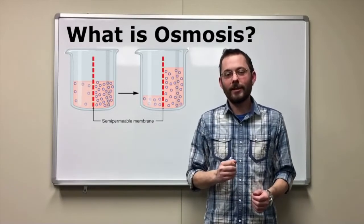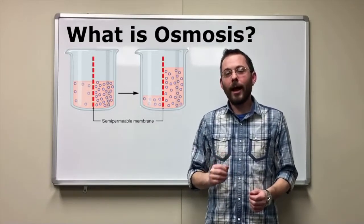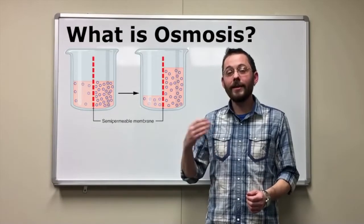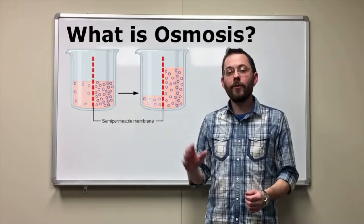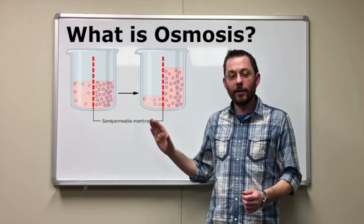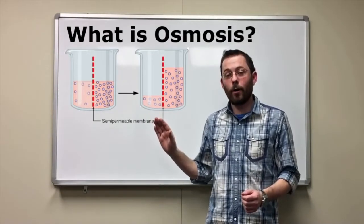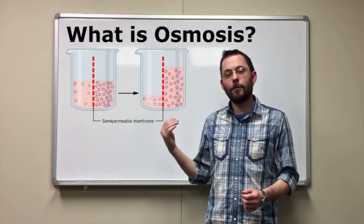You can then guess how reverse osmosis works. By supplying external pressure on the contaminated water side, you can force the water to move through the semi-permeable membrane into the purified water side, leaving the contaminants behind.